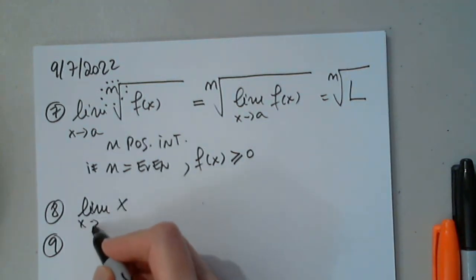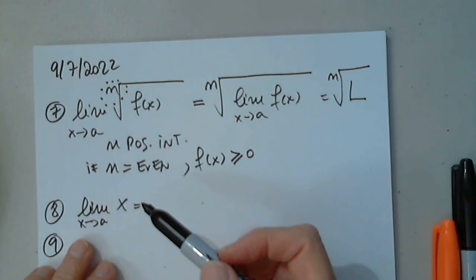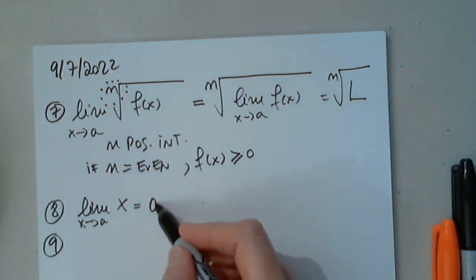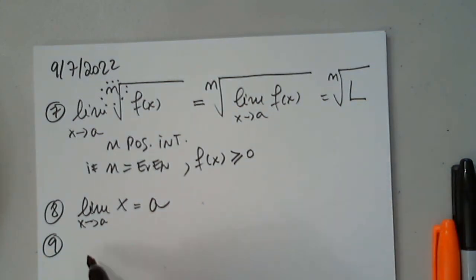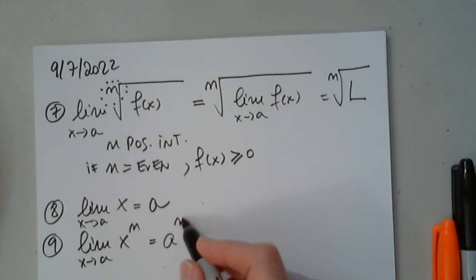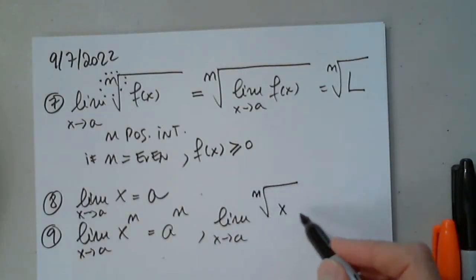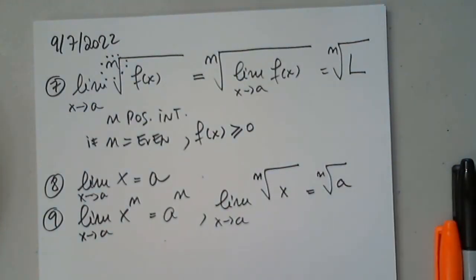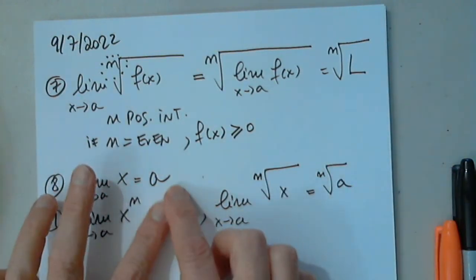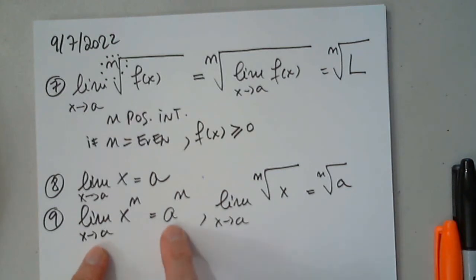So, one is the limit of x as x approaches a from either side. Well, we said, how do I determine a limit normally? I plug it in. So, obviously, there is no discussion there. And in the same token, limit of x to the nth power as x approaches a. I just plug it in like that. A to the nth power. And of course, it's the same thing with limit as x approaches a from the nth root of x.